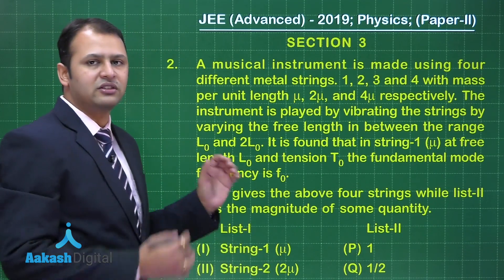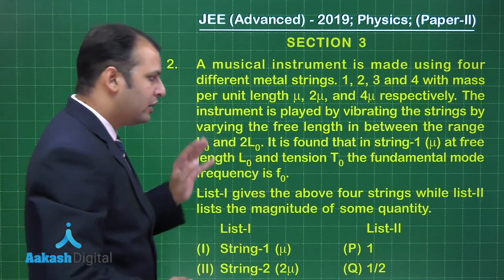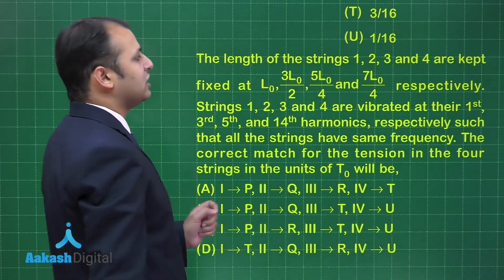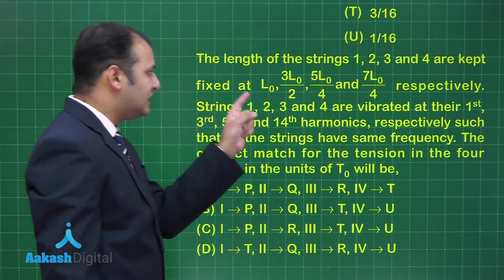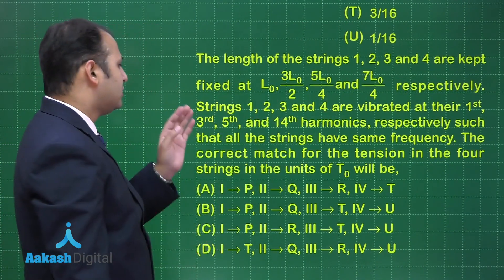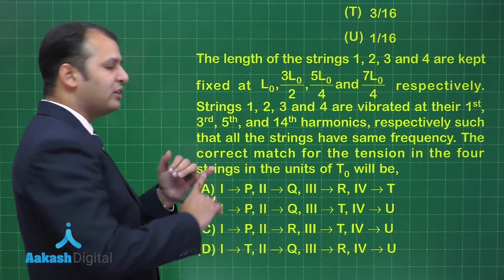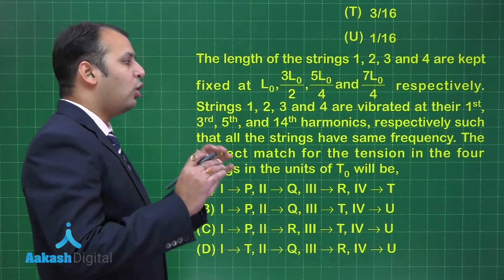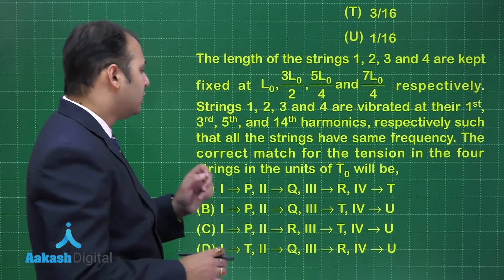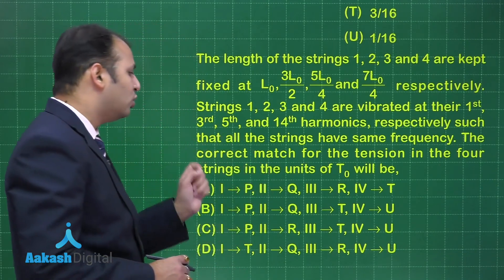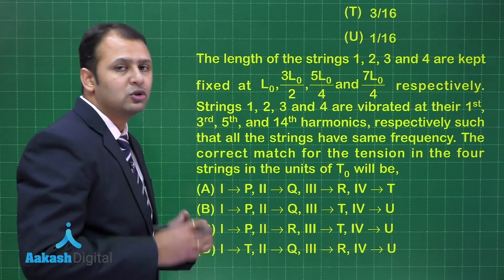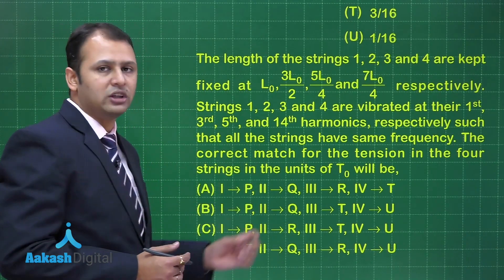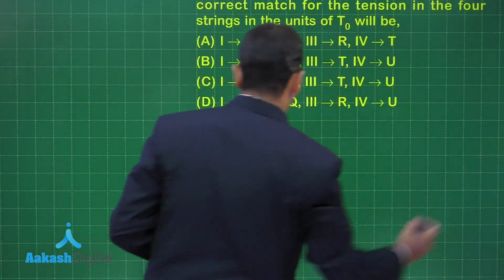Now this is the second part of the same question. The length of strings 1, 2, 3, and 4 are kept fixed at their respective lengths. The strings 1, 2, 3, and 4 are vibrated at their 1st, 3rd, 5th, and 14th harmonics respectively, such that all strings have the same frequency. We need to find the tensions in the four strings in units of T0, mapping them to the given list.